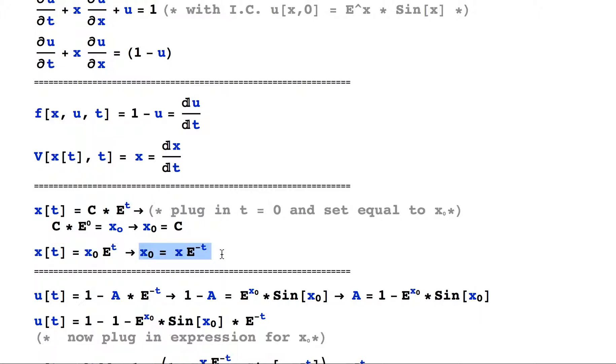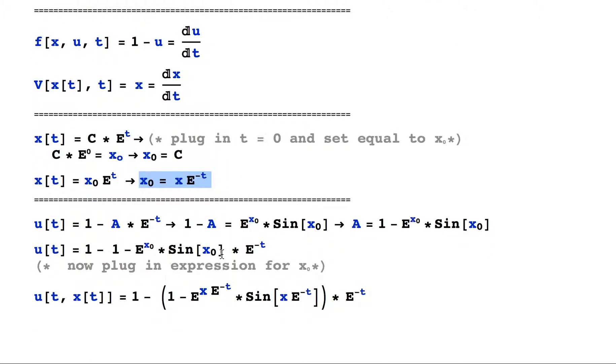And the important thing to notice here is that x_naught is completely time independent, and that would be important for this next step, which is to solve our second ordinary differential equation. We can do that simply by integrating again, separating variables and integrating, and we see that we get this expression for u, which is fairly straightforward.